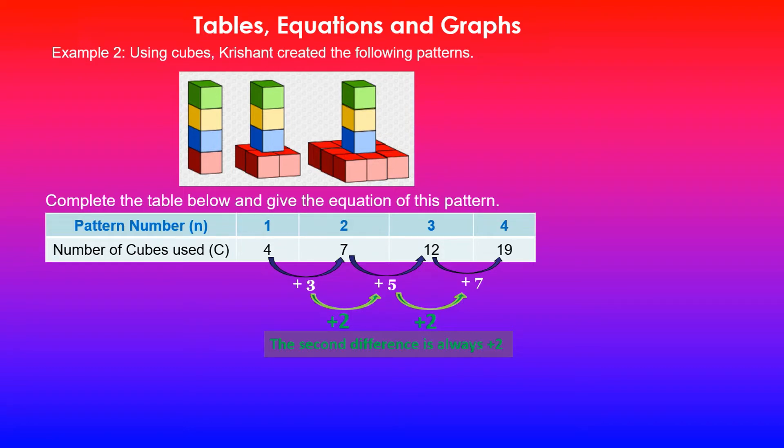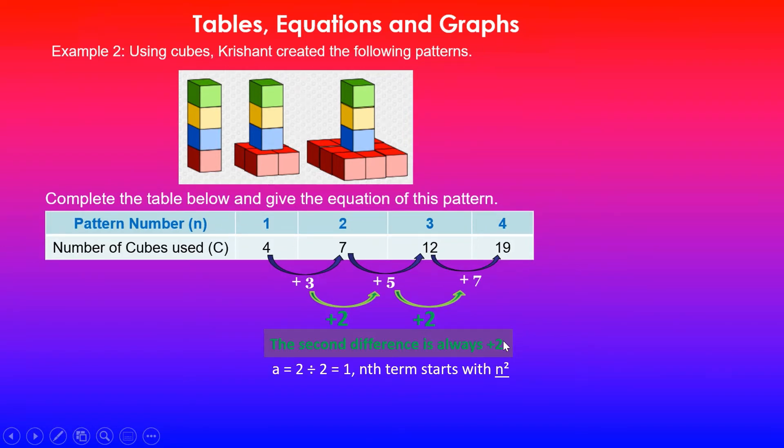If you've watched my previous video, I've shown you a method for finding the equation of this pattern. To find a, you take half of the second difference. So a will be given by the second difference, which is 2. So 2 divided by 2 gives you 1. Therefore, the nth term will start with n squared because a value is 1. So 1 times n squared is n squared. I'm using n instead of x because we're doing this in context.